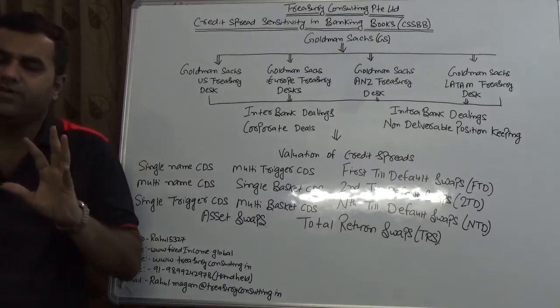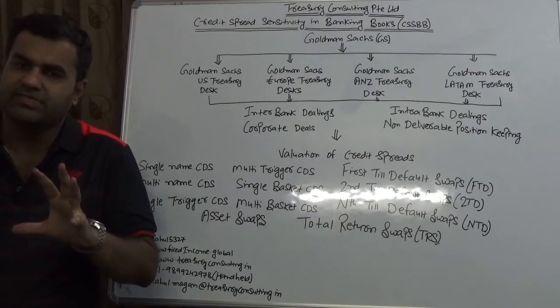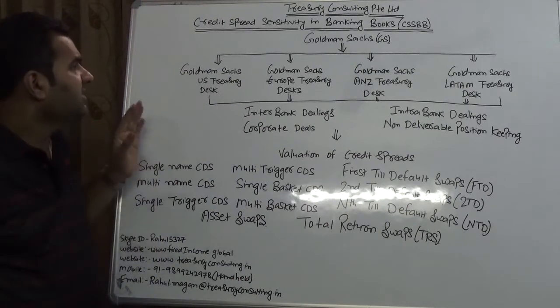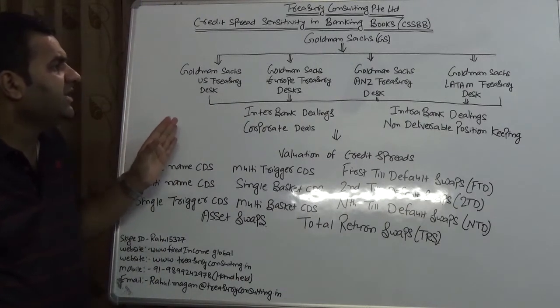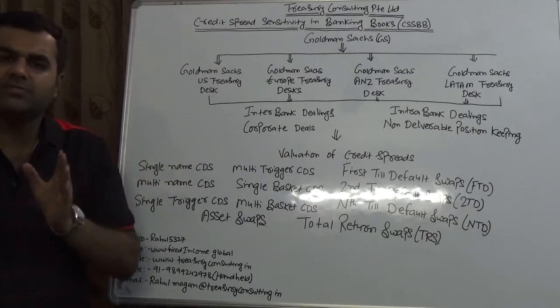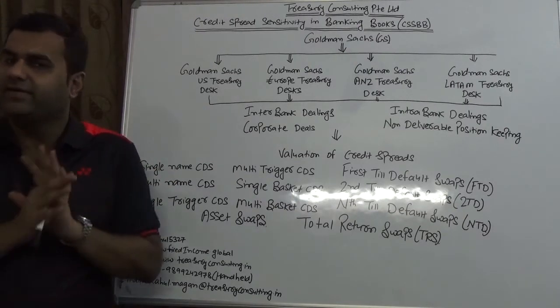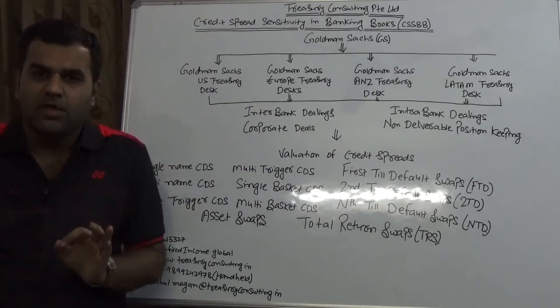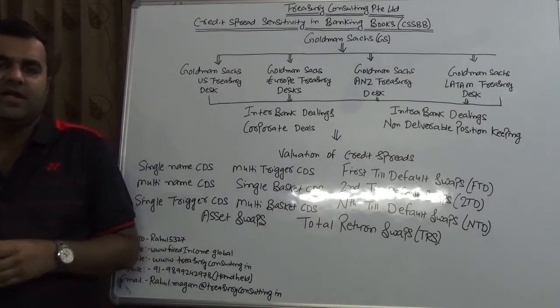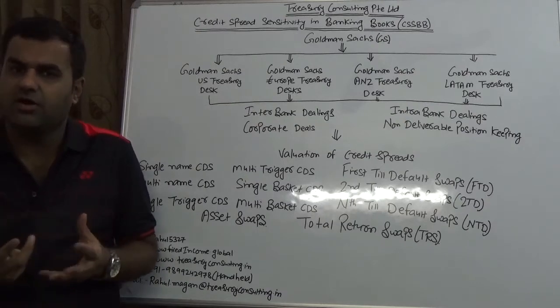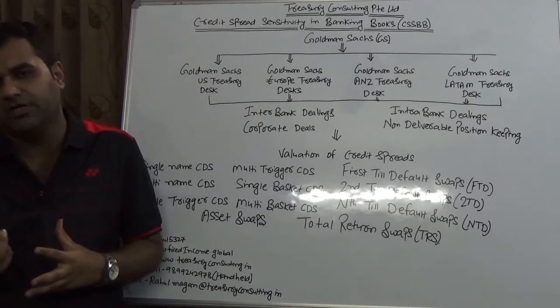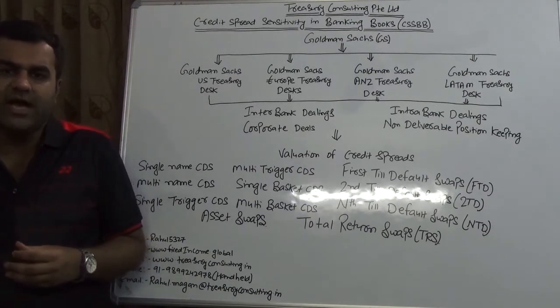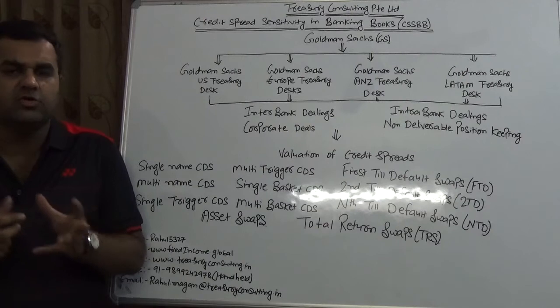Now here we go. Today we're going to talk about a very sensitive topic which is currently in the media, which is credit spread sensitivity in banking books. To explain that, we have taken an example of a bank who literally needs no introduction across the globe, which is Goldman Sachs. I don't know how many people are reading business newspapers or watching Bloomberg TV, but you should know that few weeks ago JP Morgan Chase was in news, not for good reasons.